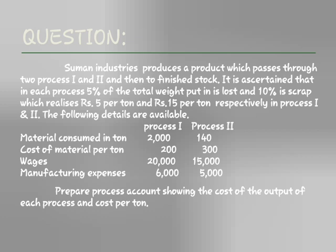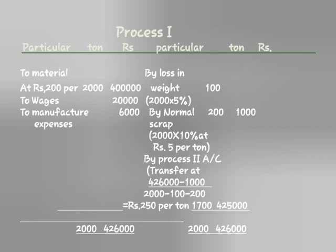We will prepare the process accounts. For Process 1: Materials — 200 per unit into 2,000 units equals 4 lakhs. Wages: Rs. 20,000. Manufacturing expenses: Rs. 6,000. Loss in weight — 5% of 2,000 is 100 units.